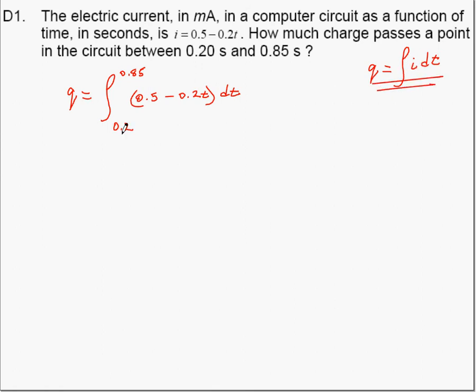Integrating i between the two points tells us how much current passes the point in that interval of time. So integrating, we get 0.5t minus 0.2t² over 2, evaluated from 0.2 to 0.85.